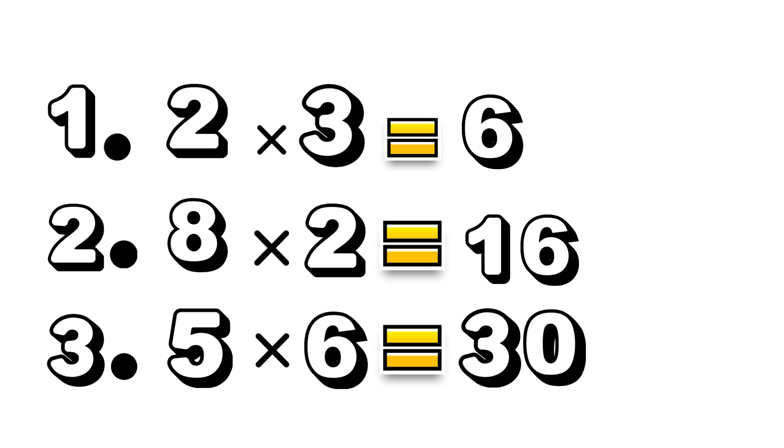Four. And here are our answers. Number one. Two times three equals six. Number two. Eight times two, which equals sixteen. Three. And our final word problem is, of course, five times six, which equals thirty.